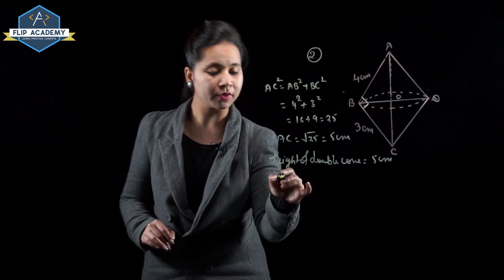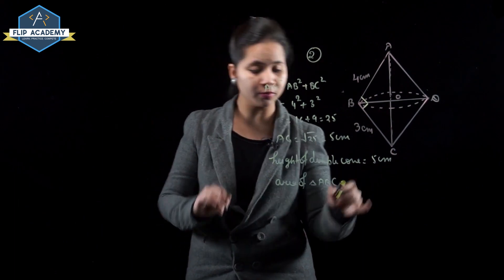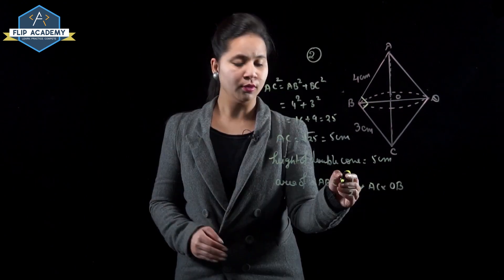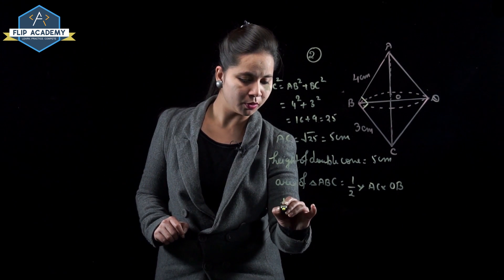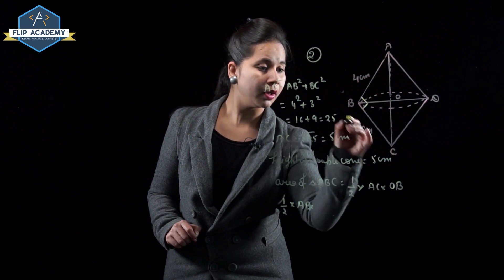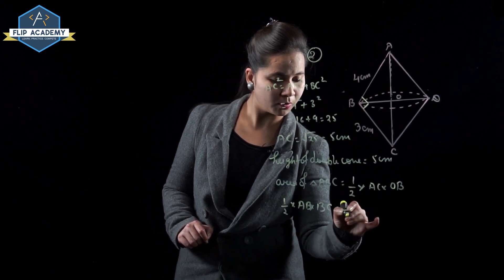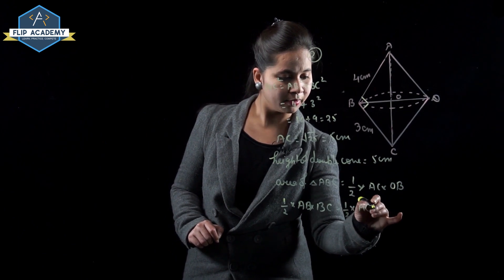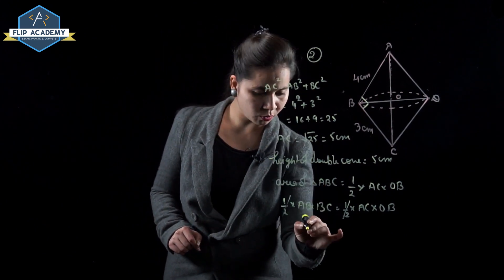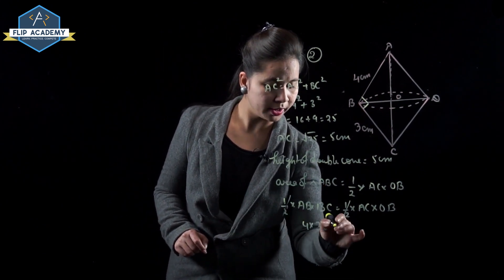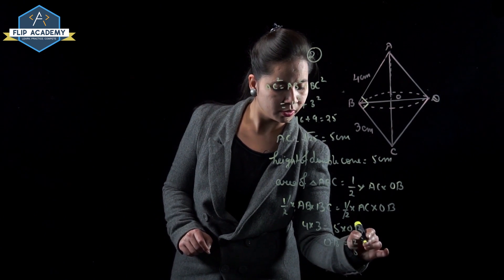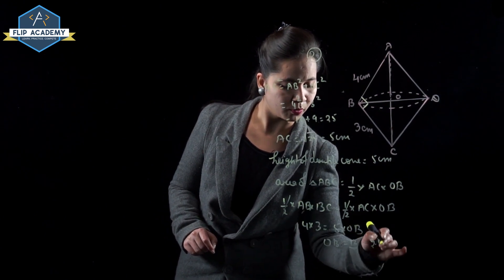Area of triangle ABC = (1/2) × base × height = (1/2) × AC × OB = (1/2) × AB × BC. So (1/2) × 5 × OB = (1/2) × 4 × 3. This gives OB = 12/5 = 2.4 cm. So the radius r of the double cone is 2.4 cm.